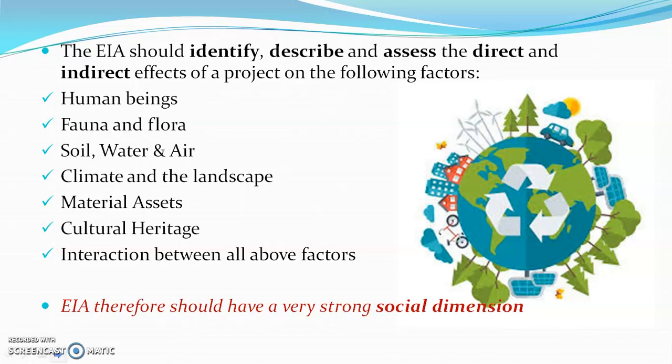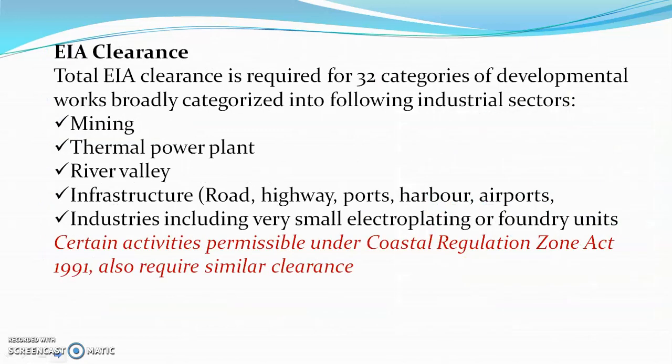EIA should have a very strong social dimension. EIA clearance is required in India for 32 categories of developmental work, broadly categorized as industrial sectors, mining sector, thermal power plant sector, river valley sector, infrastructural sectors like road, highway, port, harbor and airport development, industries including very small electroplating or foundry units. Certain activities permissible under the Coastal Regulation Zone Act 1991 also require similar clearance.